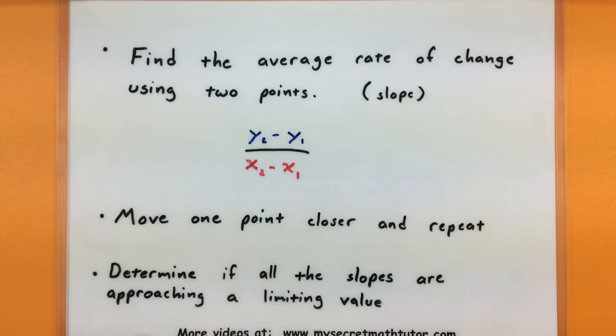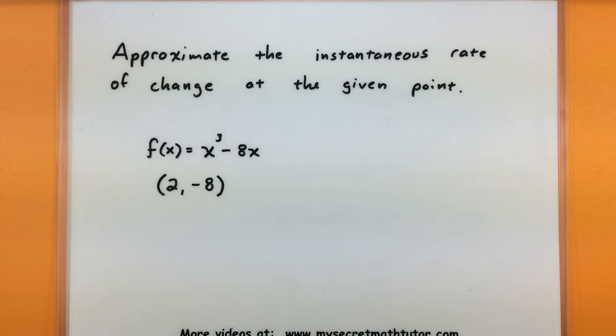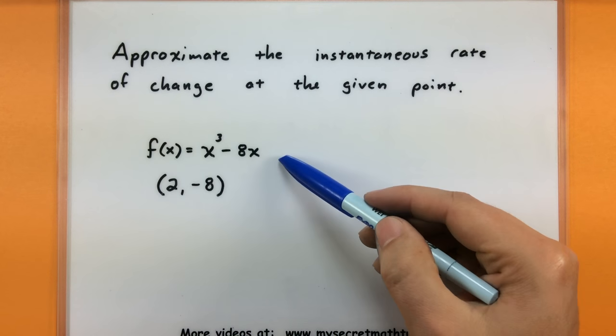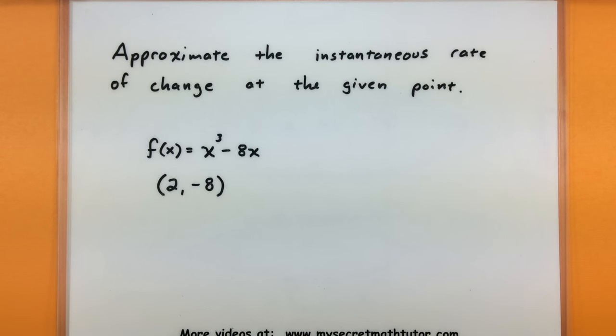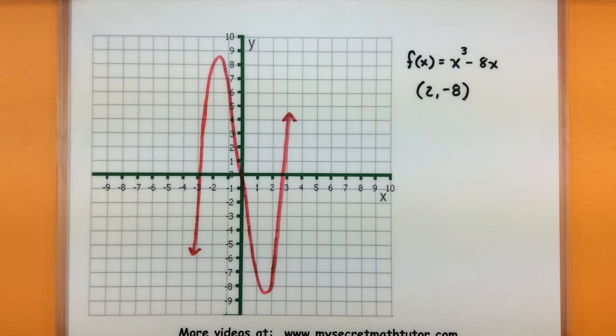Now don't worry, we will go through an example to see how all this fits together. So for this one we want to approximate the instantaneous rate of change of our given function, and we want to do it at the point. Now just so we're clear on exactly what we're doing, let's take a look at this function and exactly what we're going to do.